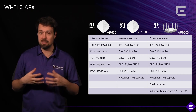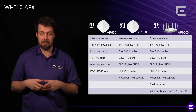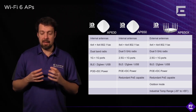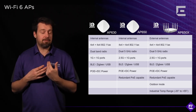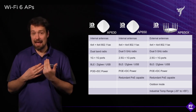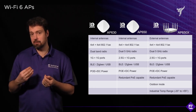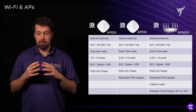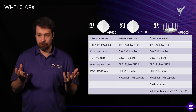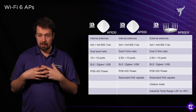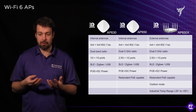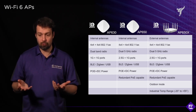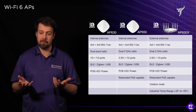Then there's the AP510CX, with X standing for external antennas. It's a similar platform with dual 5 GHz software selectable radios and two 4x4 radios.